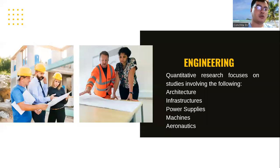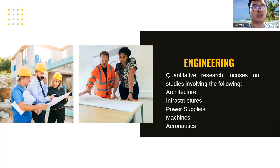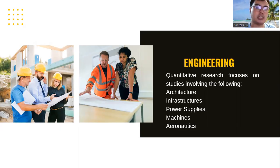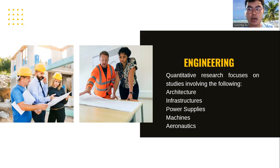In Engineering, we can focus on architecture, infrastructures, power supplies, machines, and aeronautics. In architecture we can study building designs; in infrastructures, topics like MRT systems; in power supplies, transformers and voltage regulators; in machines, computers, electric fans, TVs, and cellphones; and in aeronautics, research related to airplanes. This shows that research is universal and can be done by any profession.